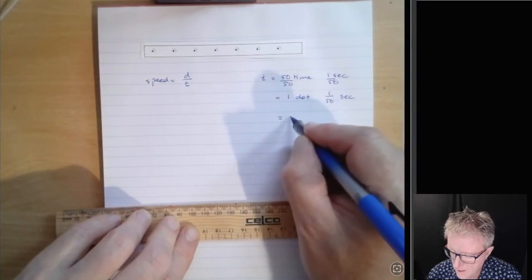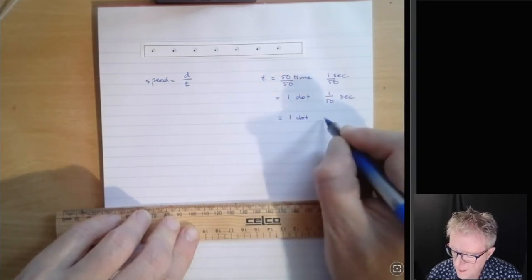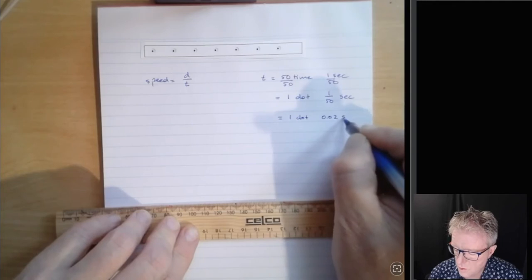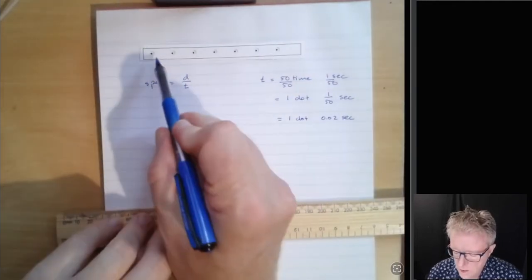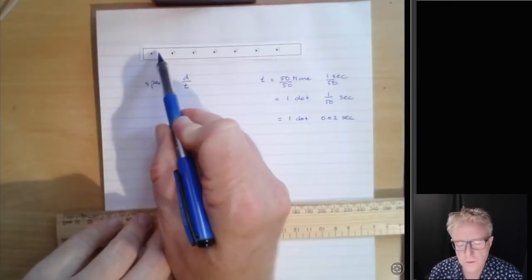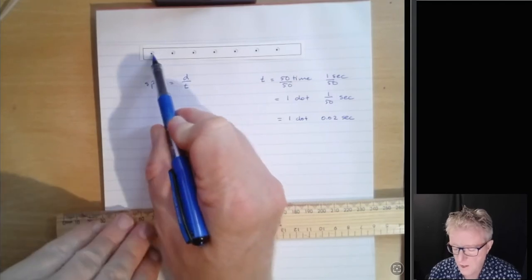So that's saying that each dot, or the distance between each dot, is 0.02 seconds. Okay? So the distance between here and here, not distance, the time between that dot and that dot, is 0.2 seconds.